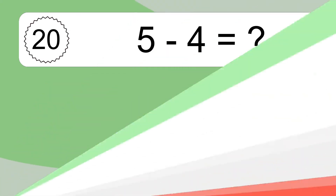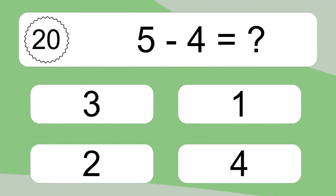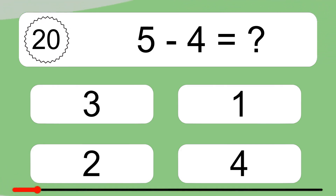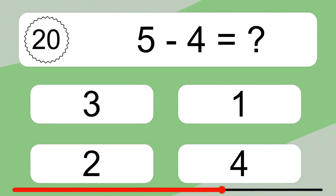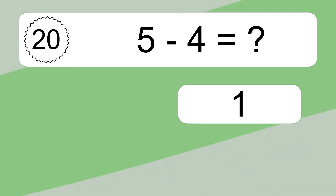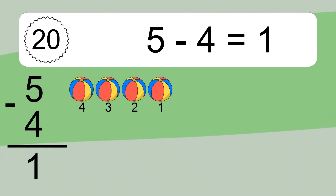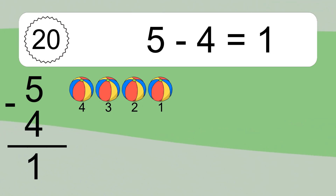5 minus 4 equals what? 5 minus 4 equals 1. Let's count it: 4, 3, 2, 1.